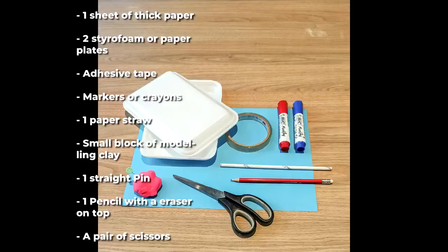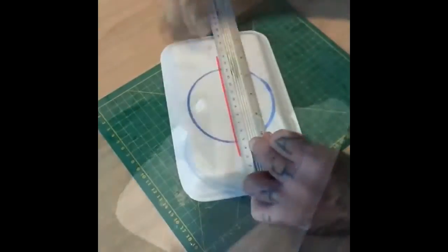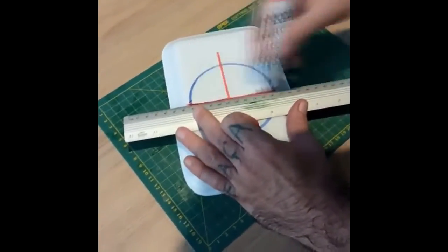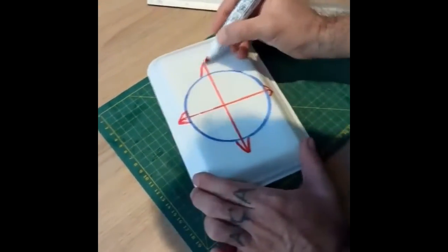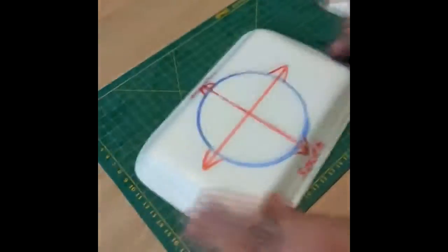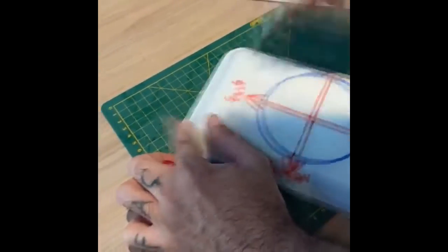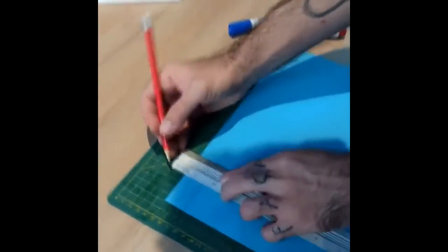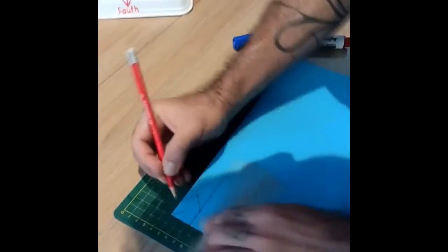First, start marking the circle. Then make the four tips and write north, south, west, and east. After that, you'll draw on a thick paper the tip and the back of the arrow.